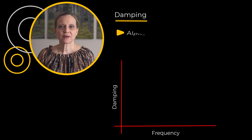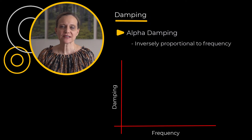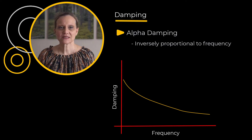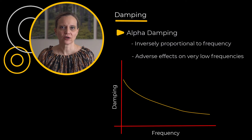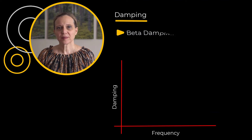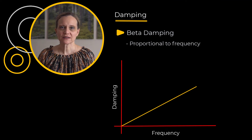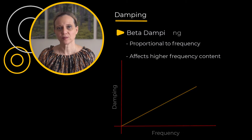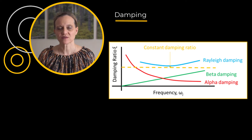Alpha damping results in a damping ratio which is inversely proportional to frequency. Because of this, we usually do not use alpha damping since it has an adverse effect on very low frequencies, so one should be careful when using it. Beta damping results in a damping ratio that is proportional to frequency and consequently tends to affect higher frequency content. We can plot these components of damping ratio versus frequency.